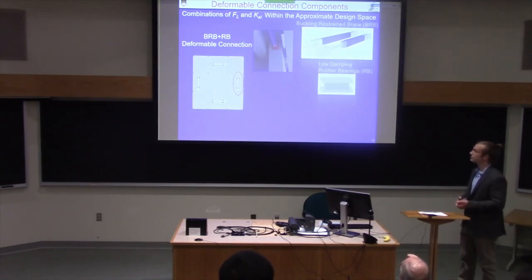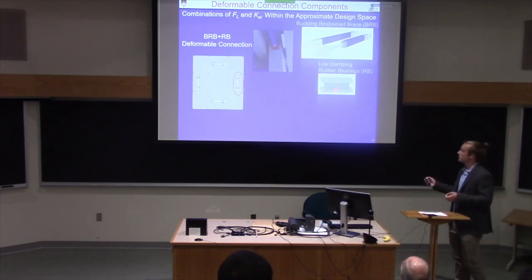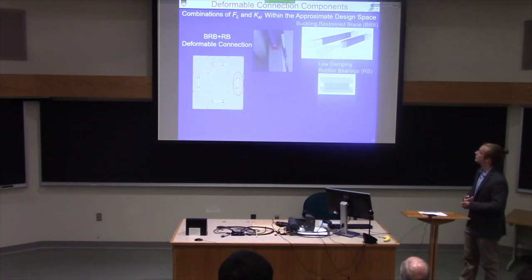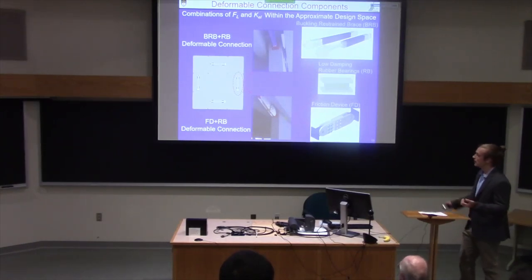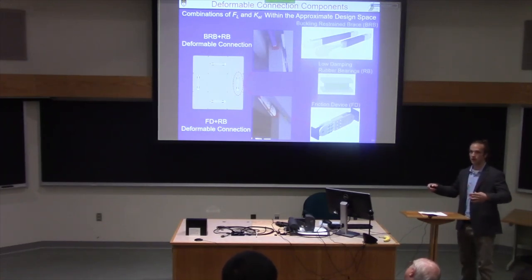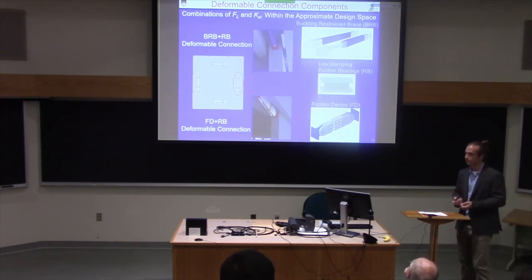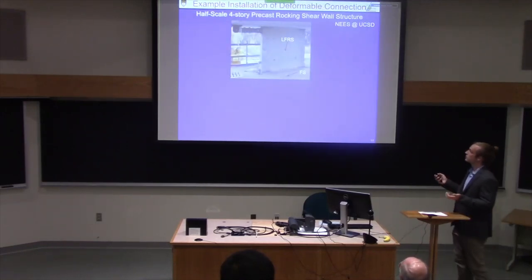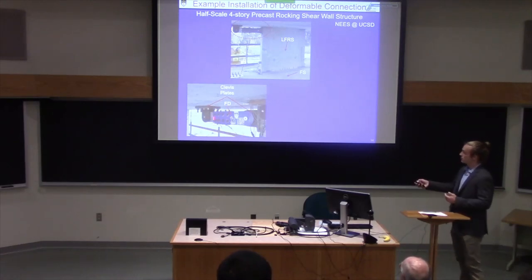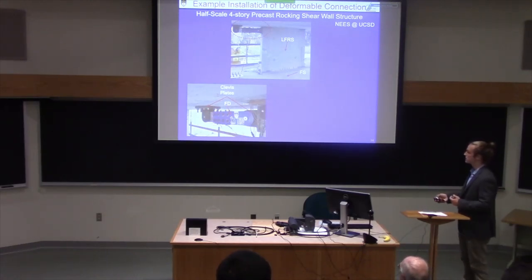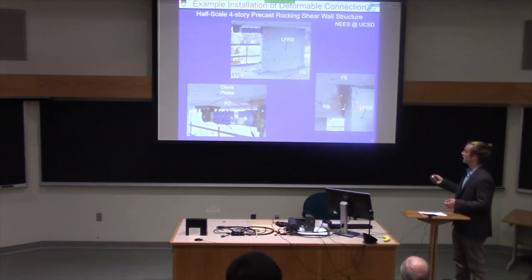There are two configurations. The first consists of a buckling-restrained brace — the limited-strength hysteretic component — and low-damping rubber bearings that provide out-of-plane wall stability and post-elastic stiffness. The second configuration consists of a friction device and low-damping rubber bearings. In both cases, openings are created around the wall and all lateral force transfer occurs only through these connections. An example is shown from a half-scale, four-story precast concrete shear wall structure tested at the University of California, San Diego, where a friction device and rubber bearings connect the floor to the lateral force-resisting system.